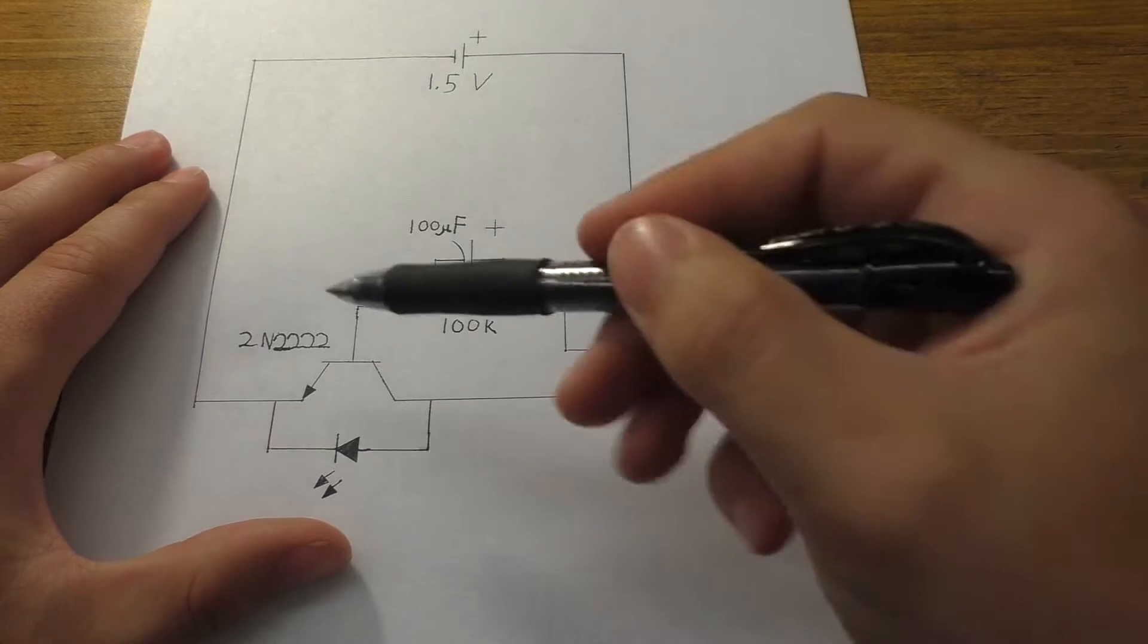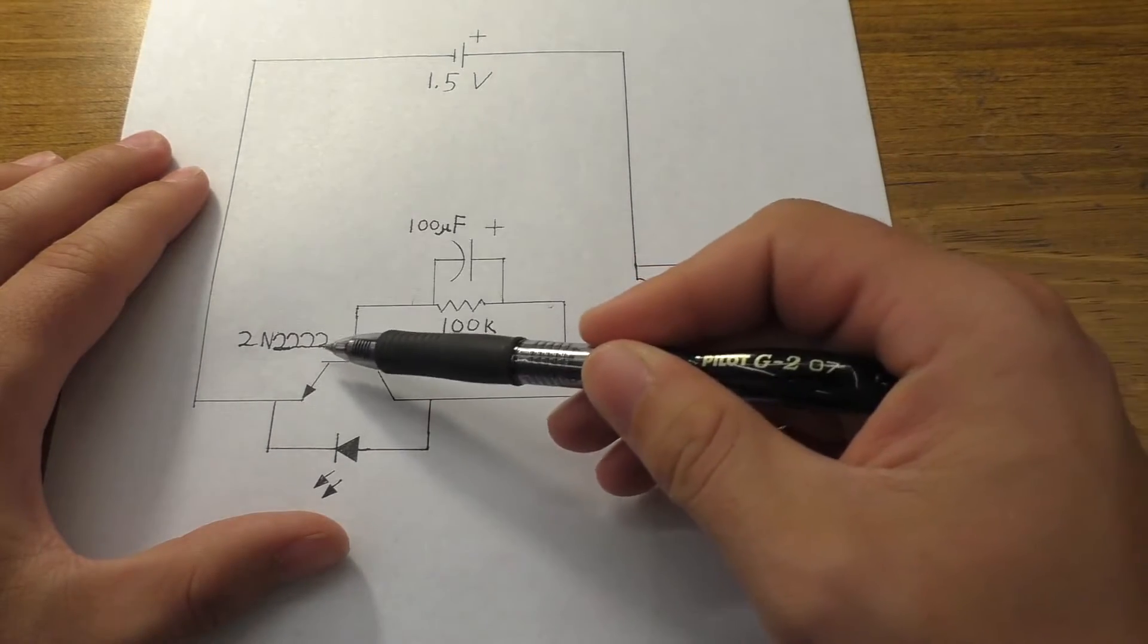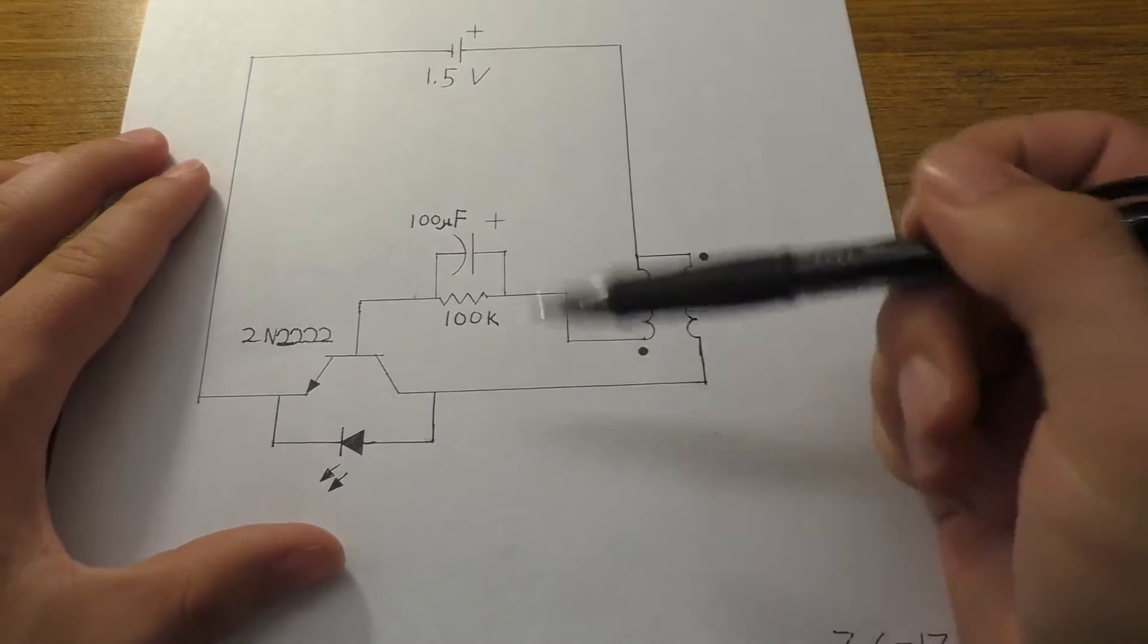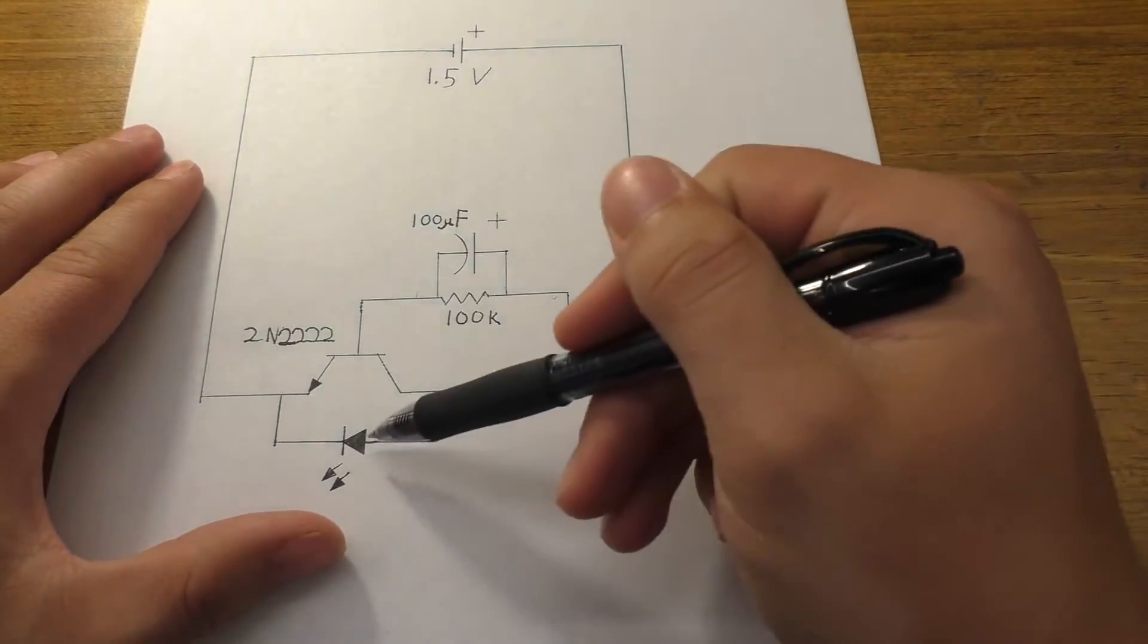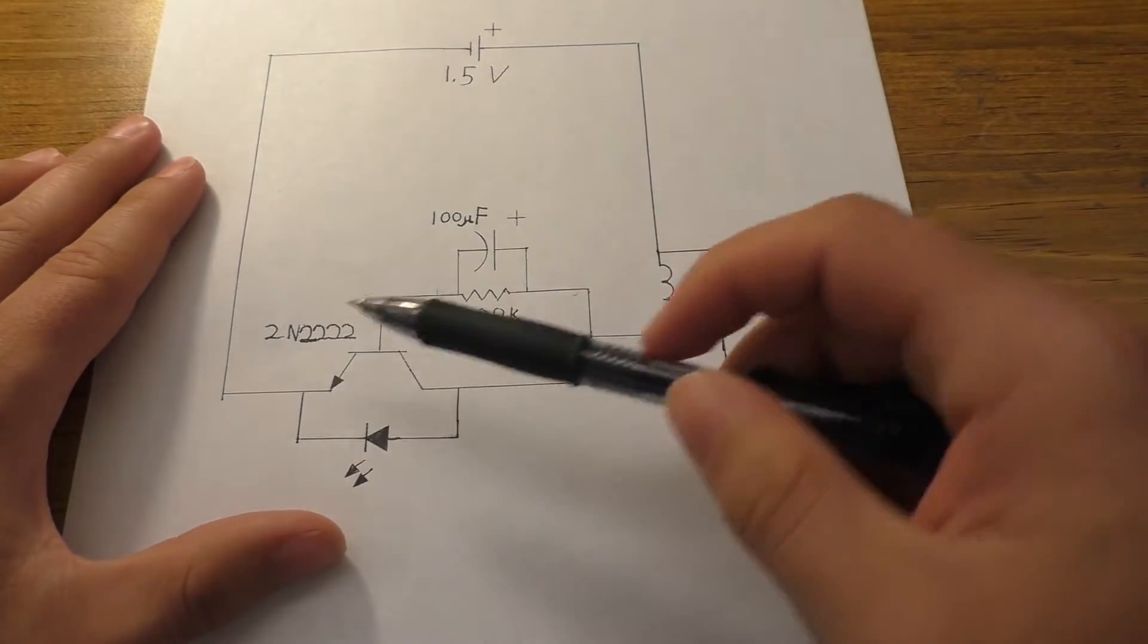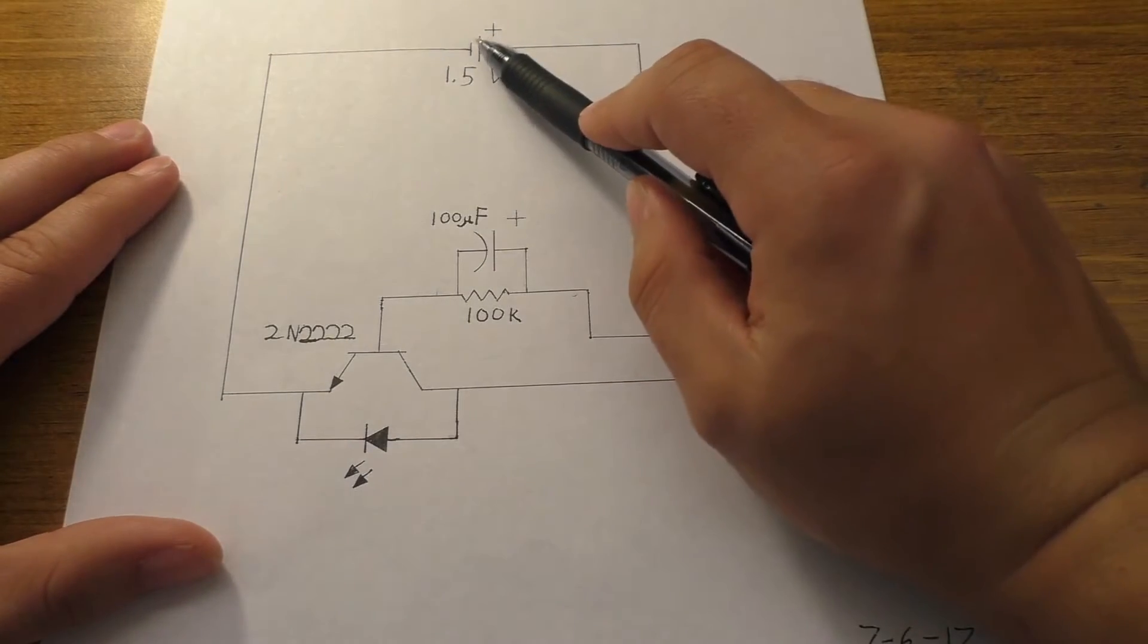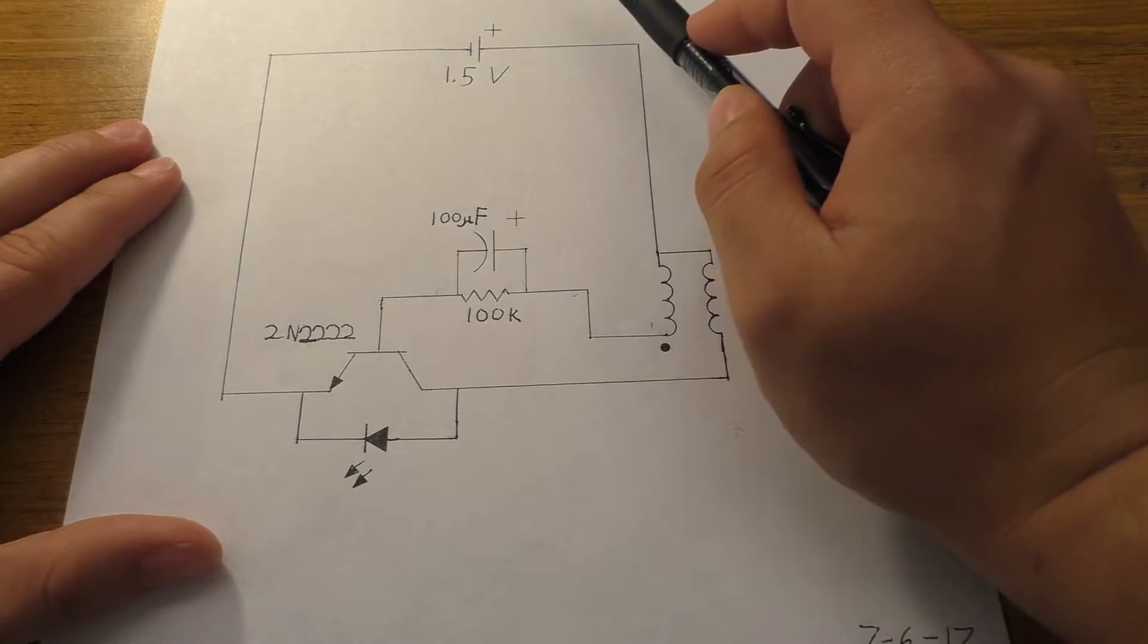One of the coils gets connected into the collector of an NPN transistor. In this case, it's a 2N2222. That also gets hooked up to the cathode of an LED. The anode of the LED is hooked up to the emitter of that transistor and the emitter of the transistor goes back into the negative of the battery.